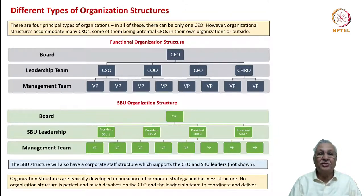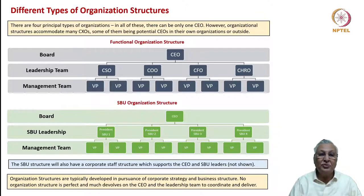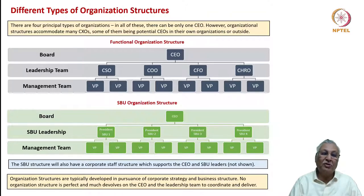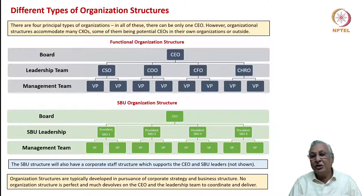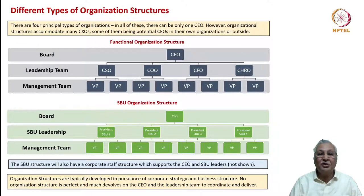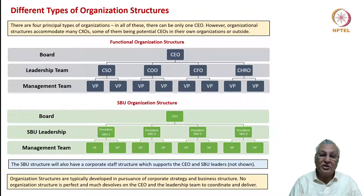In an SBU organization structure, you still have the CEO at the board level, but below that are SBU leaders — presidents or chiefs of each strategic business unit — each looking after one type of business. Each SBU head has a management team reporting to them. An SBU structure also has a corporate staff center which advises the CEO and connects the CEO with the various SBUs.